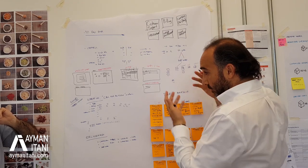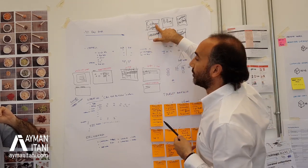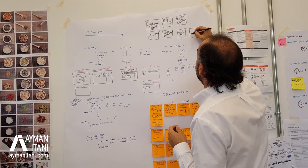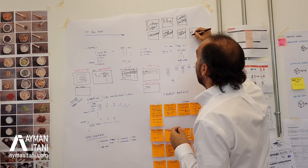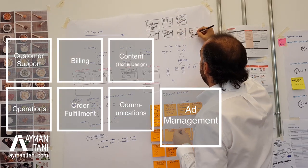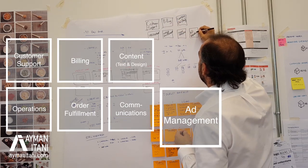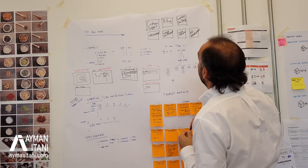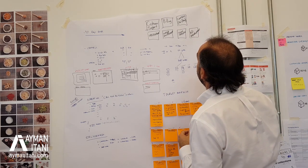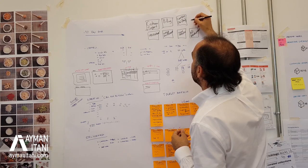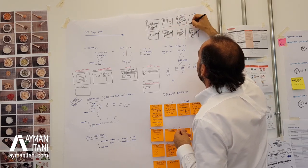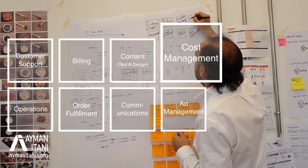Then there's ad management — the advertising part, which is related to everything else we're looking at. And some form of cost management: we need to look at our costs, our unit costs. Cost management is something to keep an eye on.